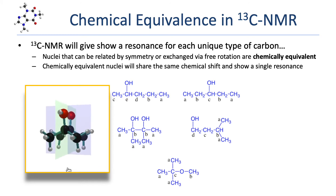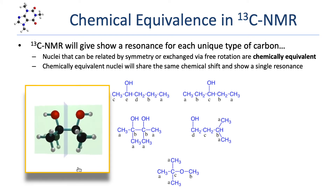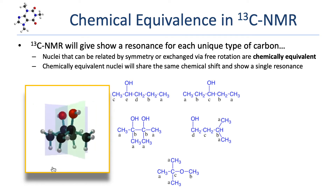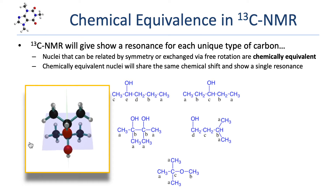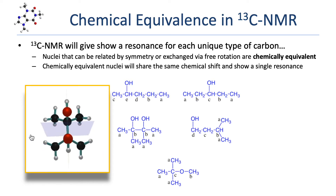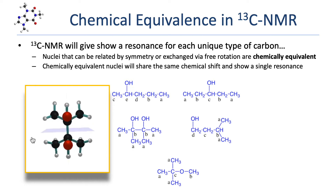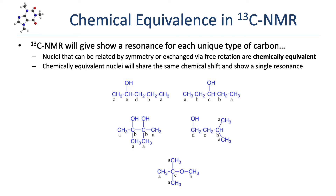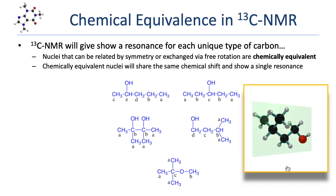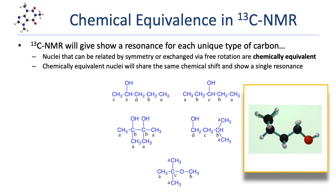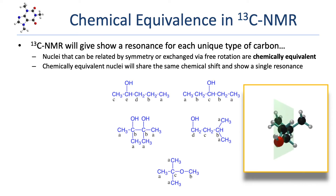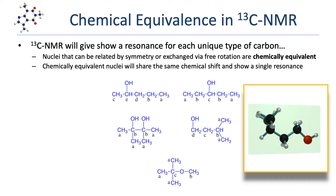The next molecule has two mirror planes. One bisects the carbon-carbon bond between the two alcohols, reflecting the left half to the right half. A second perpendicular mirror plane reflects the two methyl groups attached to each carbon, making all four methyl group carbons chemically equivalent. So this molecule gives rise to only two resonances in a C13 NMR spectrum. In the next example, a mirror plane runs down the length of the molecule; the three carbons in the mirror plane are unique, but the two methyl carbons on the end are reflected and chemically equivalent, giving four resonances.